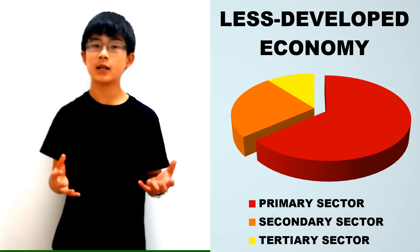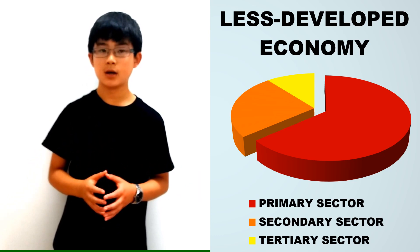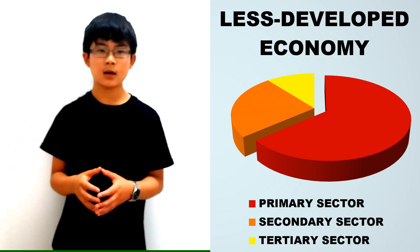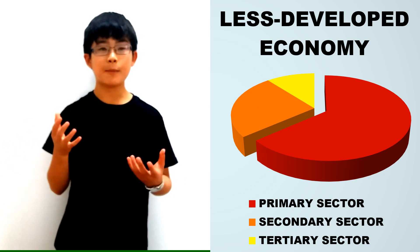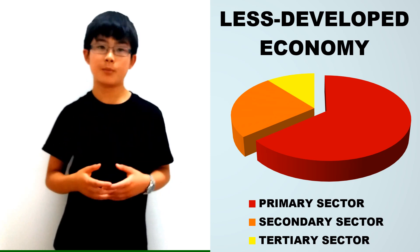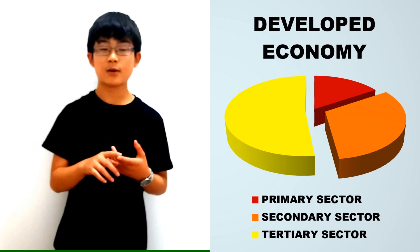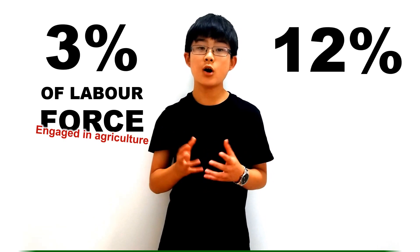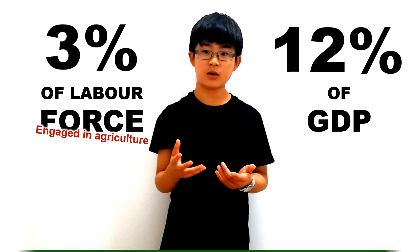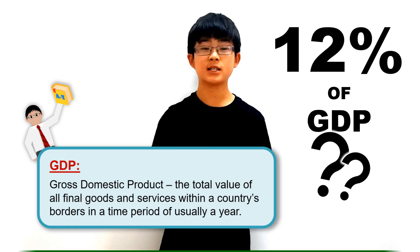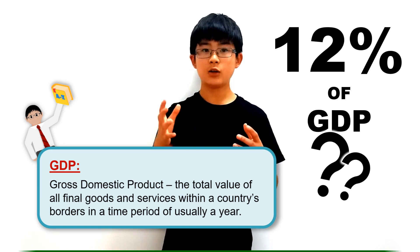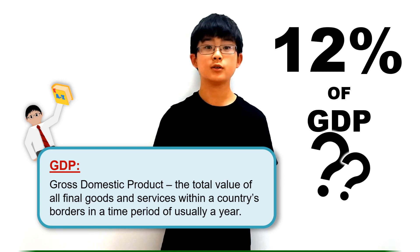The primary sector is generally the largest of the three in less developed economies. But for economies like here in the UK, which is more developed with higher labour productivity, so that's when the labour is more productive, they can move on to other sectors, like the other two, the secondary and tertiary sectors. That's why here in the UK, only about 3% of the labour force is engaged in agricultural production. And overall, the primary sector only makes up about 12% of GDP.